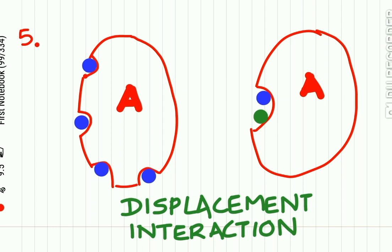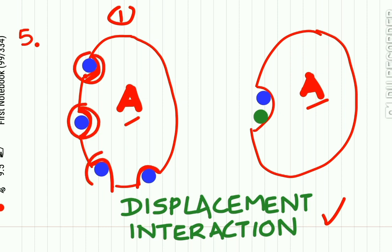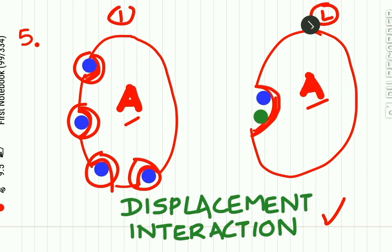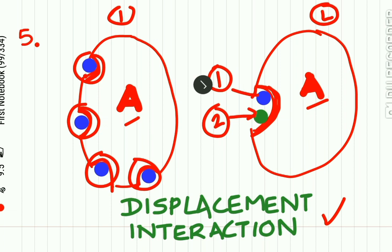Another important factor is displacement interaction. Suppose this is an albumin molecule with multiple binding sites. A drug can bind to multiple sites of the albumin molecule. In another scenario, two types of drugs can come and bind to the same single binding site. So one drug can bind to many sites of the albumin molecule, and more than one drug can even bind to a single site.